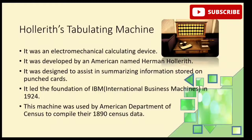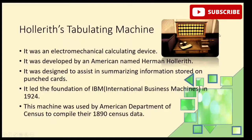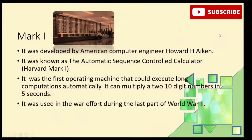Next is the Hollerith Tabulating Machine, which is an electromechanical calculating device. This machine was developed by American inventor Herman Hollerith. It used punch cards to store and process information. This machine was later named IBM. Around 1880, the American population had grown, and recording population data was very expensive and slow, taking clerks around 7 to 8 years. So in the 1890 census, this machine was implemented to measure and record census data much faster.